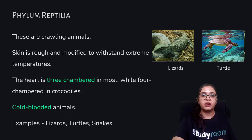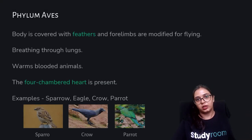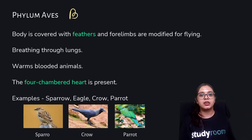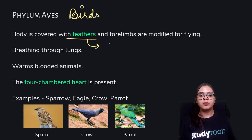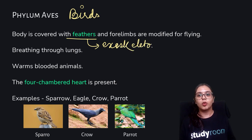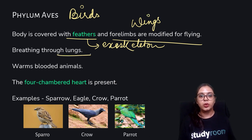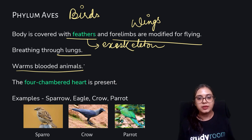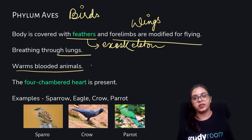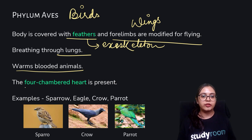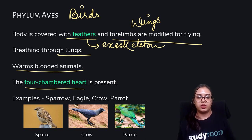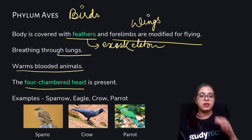Aves are birds. Their body is covered with feathers and their four limbs are modified for flying, giving them wings. They breathe through lungs — no gills. They are warm-blooded animals and have a four-chambered heart. Examples: sparrow, eagle, crow, and parrot.